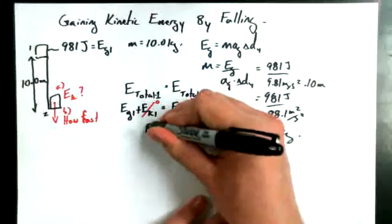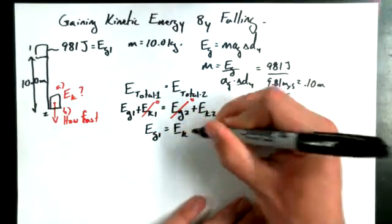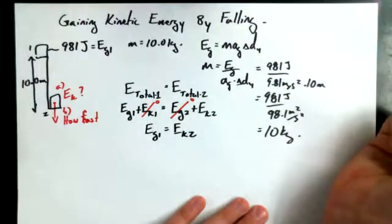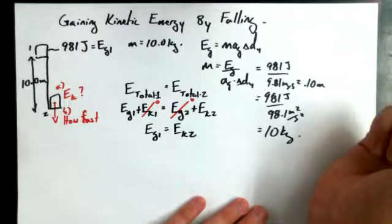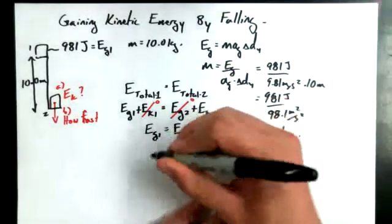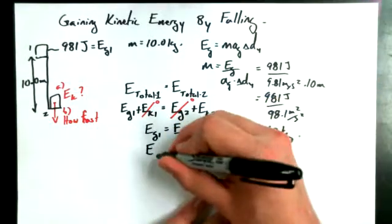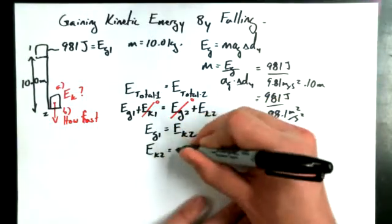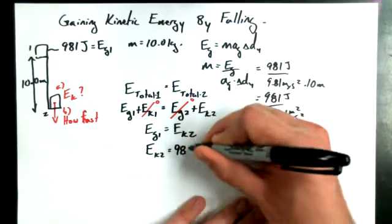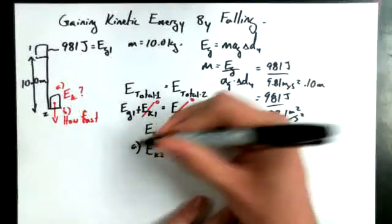And so I could say, all right, well, EG1, or EG initial, is equal to EK final. Energy is conserved. That's all we're saying. Energy got converted over to kinetic energy. And so we could say that the kinetic energy, in this case, if we start off with 981 joules of gravitational potential energy, the final kinetic energy is going to be 981 joules. No problem.